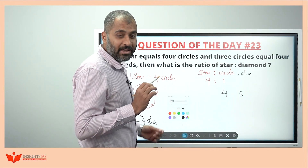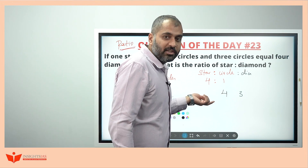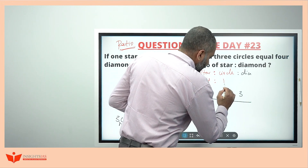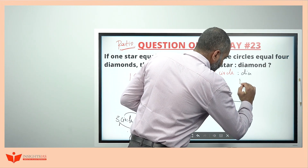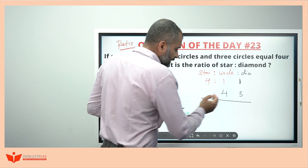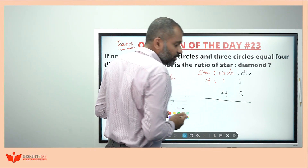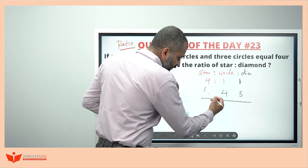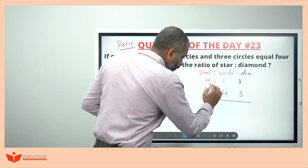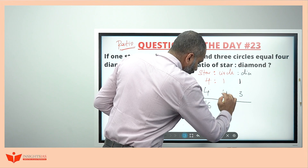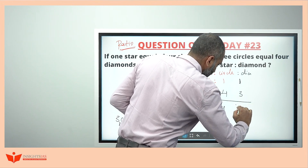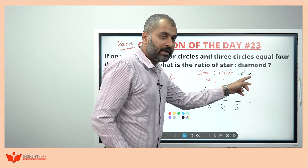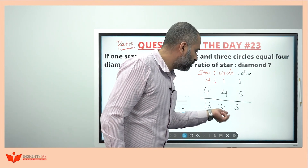You know how to equate the ratio — we learnt this in the previous videos also. Whatever is here, write the same numerical in front of it. Four is here, so four. Four into four is sixteen, one into four is four, one into three is three. So the ratio of star to circle to diamond is sixteen to four to three.